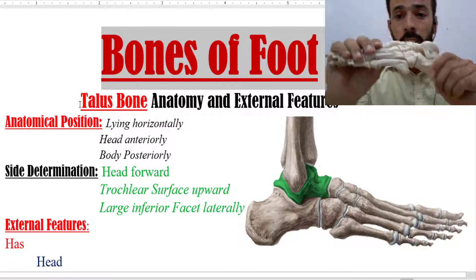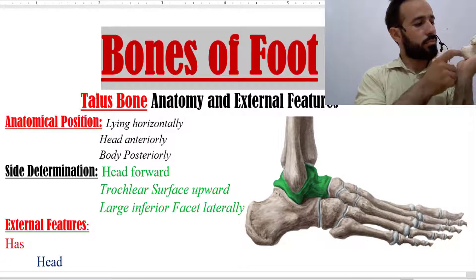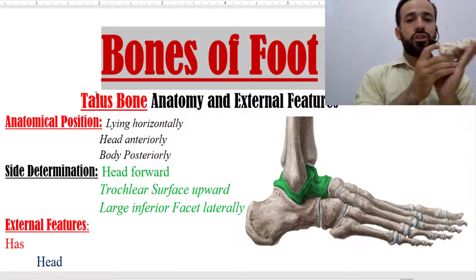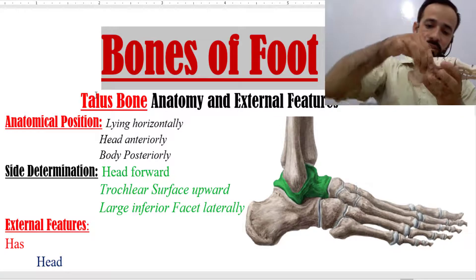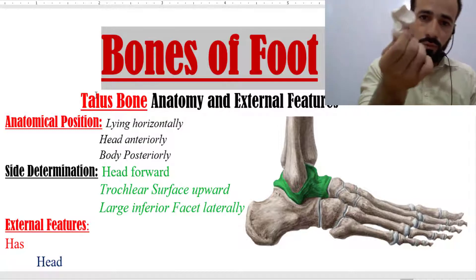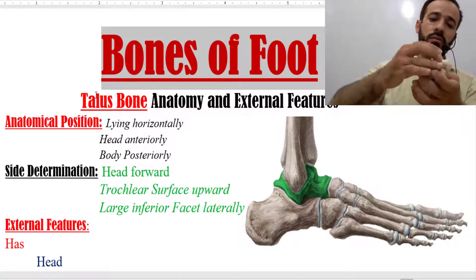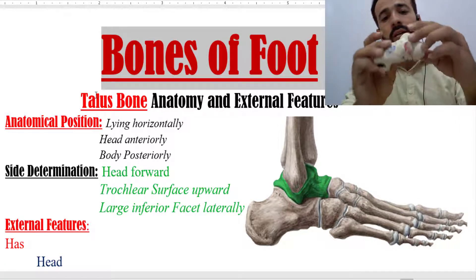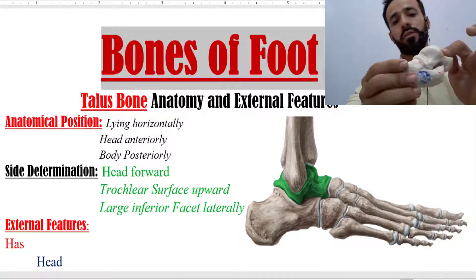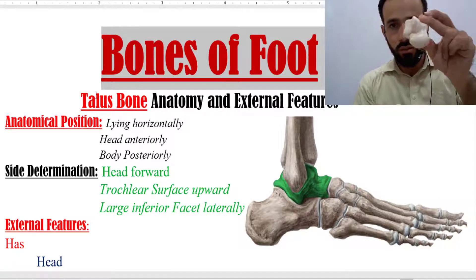The talus is the second largest bone of the foot. If I hold this foot in its position, this is the talus bone, which makes your ankle joint with the tibia and fibula. Here we have another model of the talus bone so you can see it from all sides. This is the calcaneus bone and the way they make a joint is called the subtalar joint or the talocalcaneal joint. We are not going to discuss those joints here — we are just going to discuss the external features.